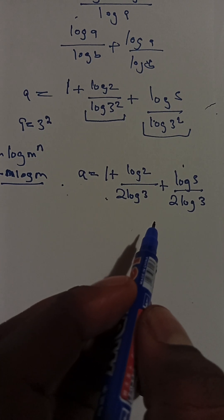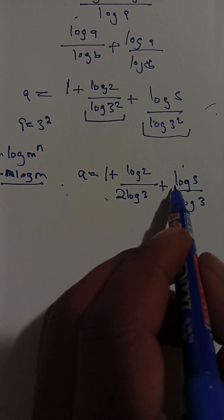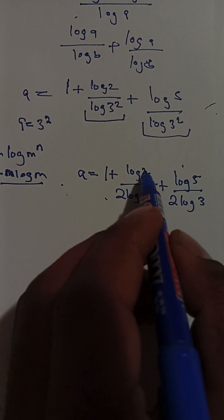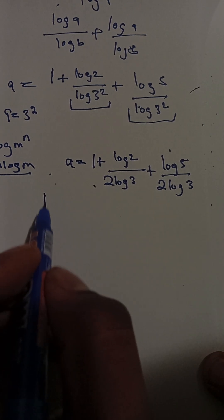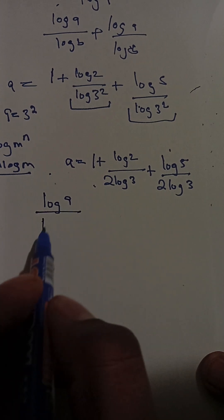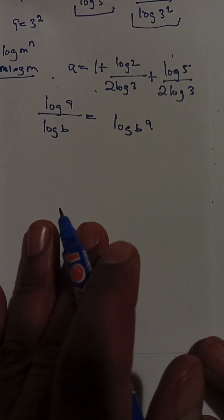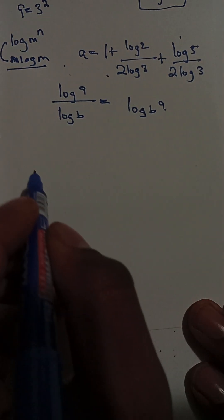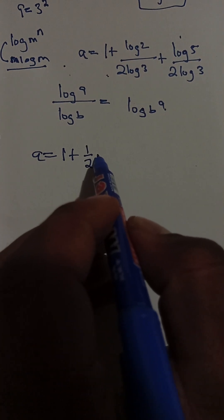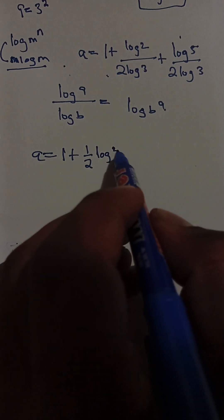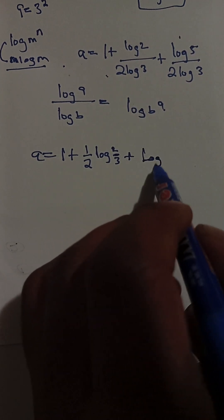We have halves in both terms. Using log(a)/log(b) = log_b(a), this becomes a = 1 + (1/2)·log₃(2) + (1/2)·log₃(5). That is our final simplified answer.